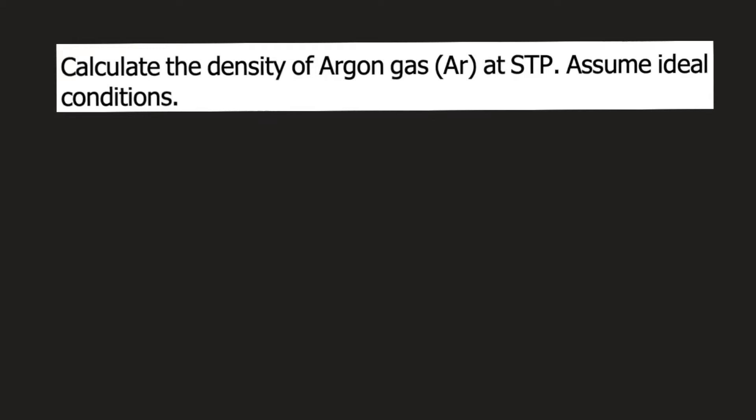Calculate the density of argon gas at STP. Assume ideal conditions. So STP means standard temperature and pressure. The standard temperature is 273.15 Kelvin and the standard pressure is 1 atm.